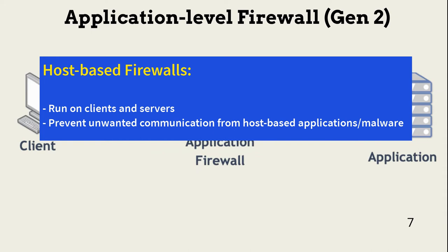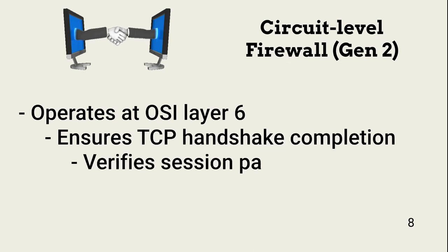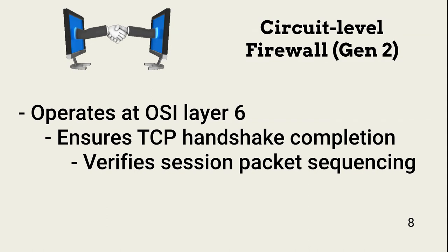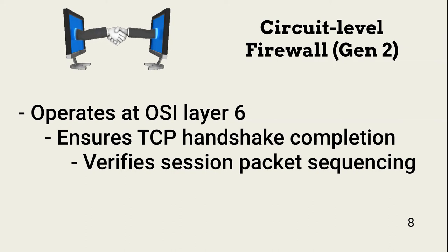Application layer firewalls are the slowest form of firewall. The circuit level firewall, also a generation 2 firewall, only operates at OSI layer 5. The only thing it does is ensure that TCP handshakes are completed, and it also verifies the sequencing of session packets.